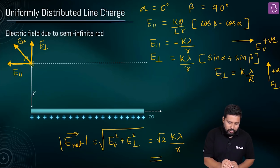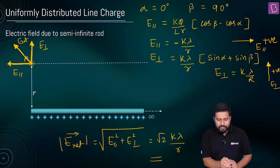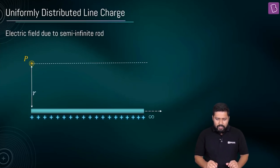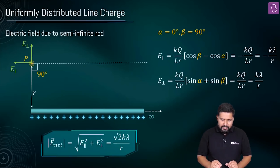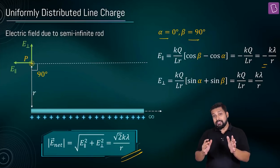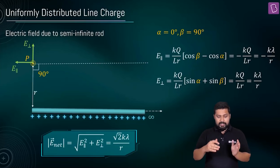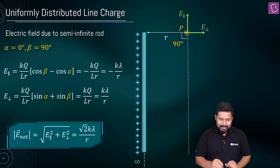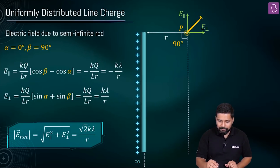Remember the direction of E_net — both components are equal, giving a 45-degree net direction. The values of alpha, beta, and the final result are all key. If the question rotates the rod, you still get the same values of E_parallel and E_perpendicular. Drawing the net direction of the electric field gives the same result in any orientation — no problem.